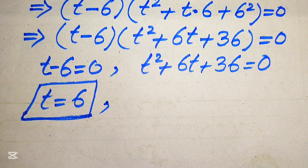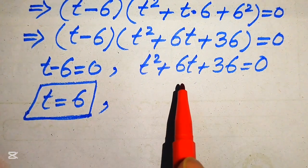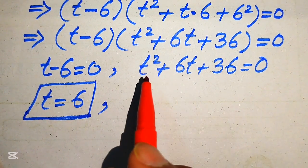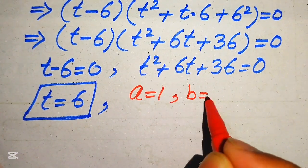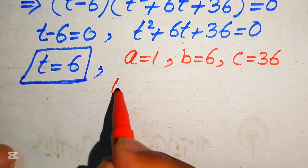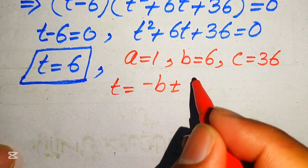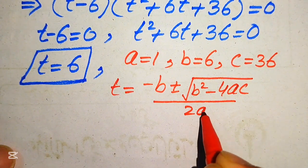There are three ways to solve a quadratic equation: by factorization, by completing the square, and by using the quadratic formula. Here we solve using the quadratic formula. The coefficients of t squared plus 6t plus 36 are: a equals 1, b equals 6, and c equals 36. The quadratic formula is t equals negative b plus or minus square root of (b squared minus 4ac), divided by 2a.